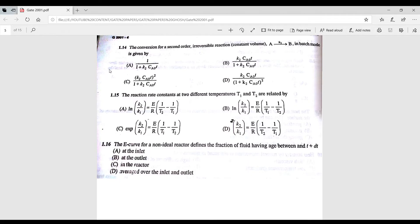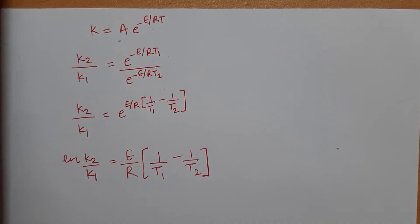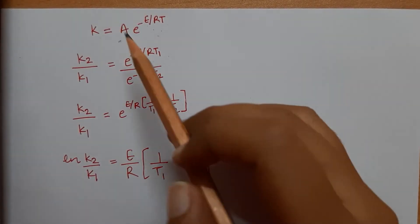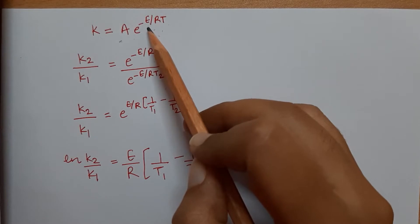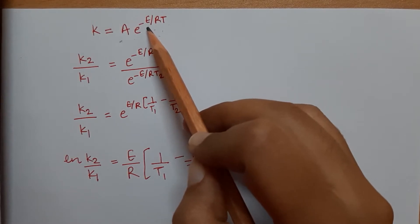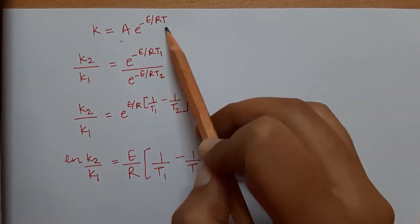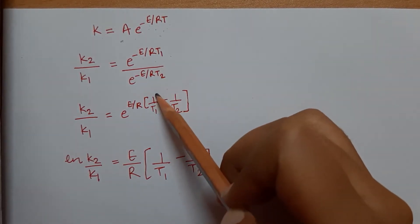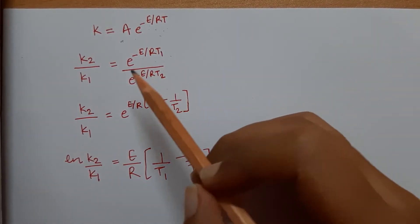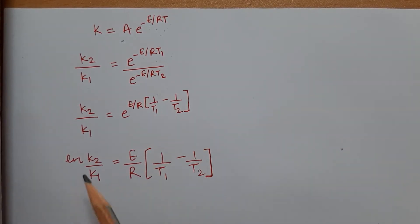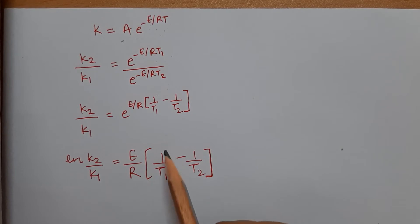Question 1.15: how are rate constants related at two different temperatures? From Arrhenius theory, K = A·e^(−E/RT), where E is activation energy, R is the gas constant, and T is temperature. For two different temperatures, taking the ratio and solving gives: ln(K₂/K₁) = (E/R)·(1/T₁ − 1/T₂).